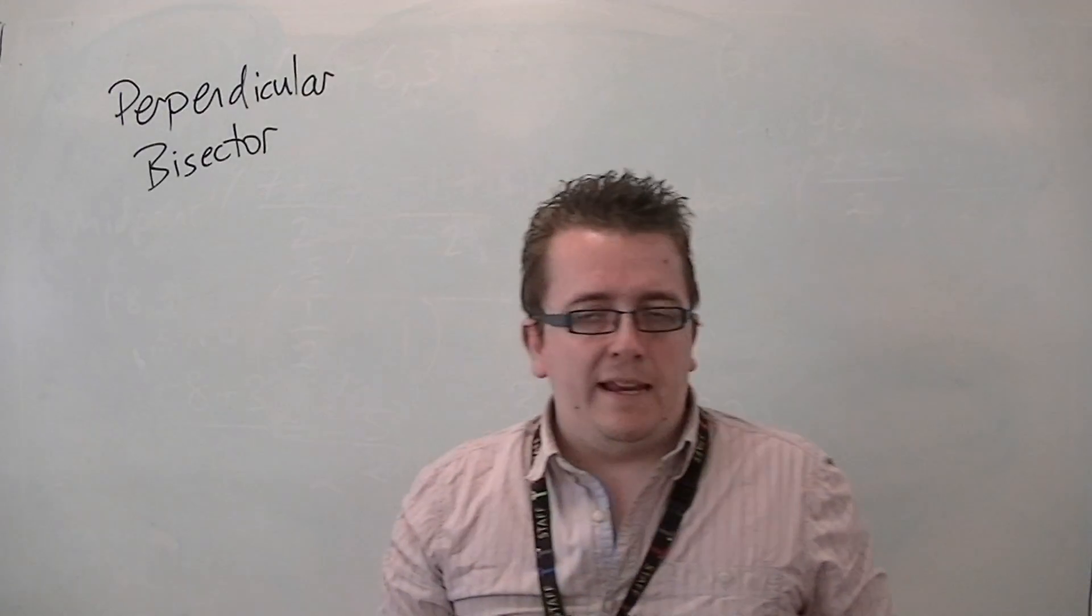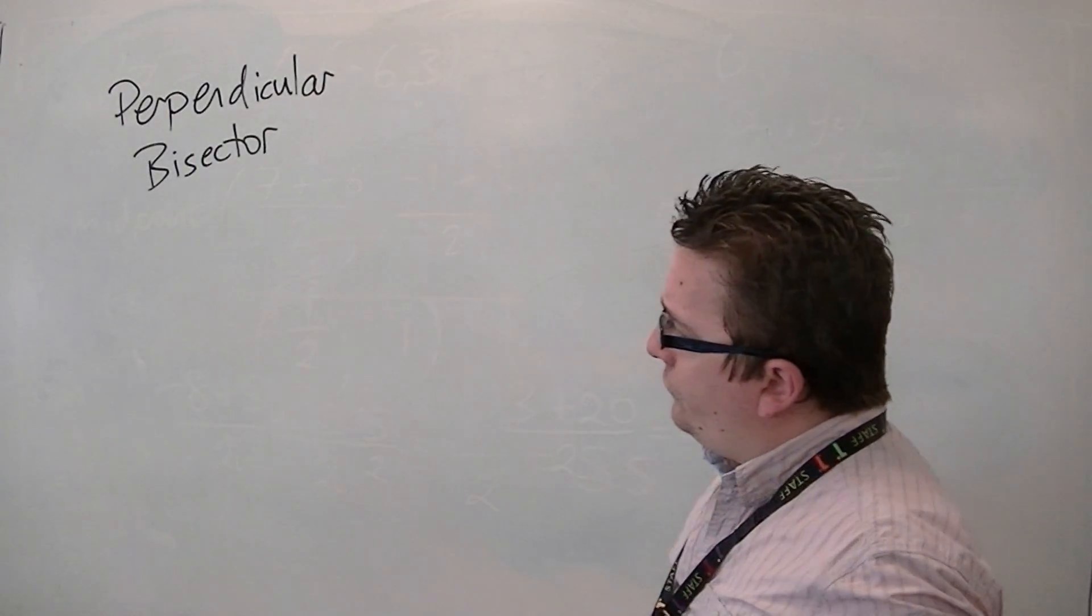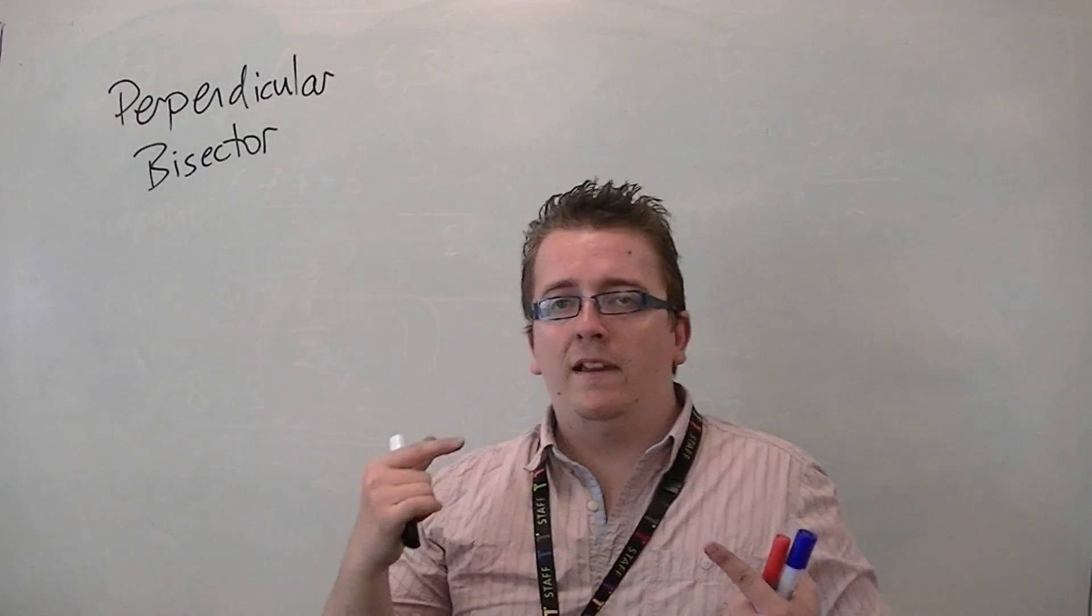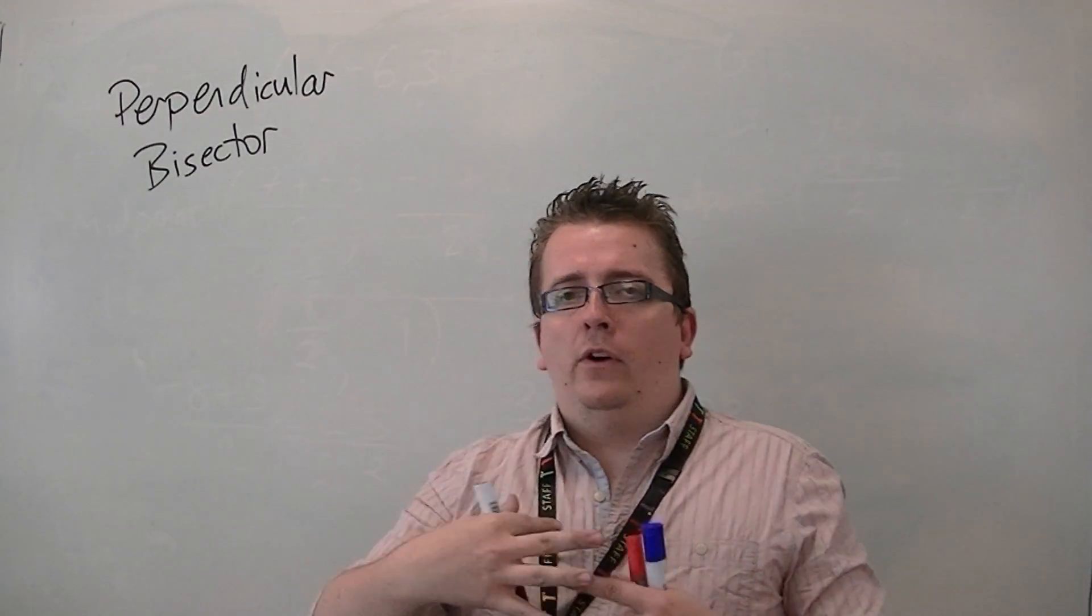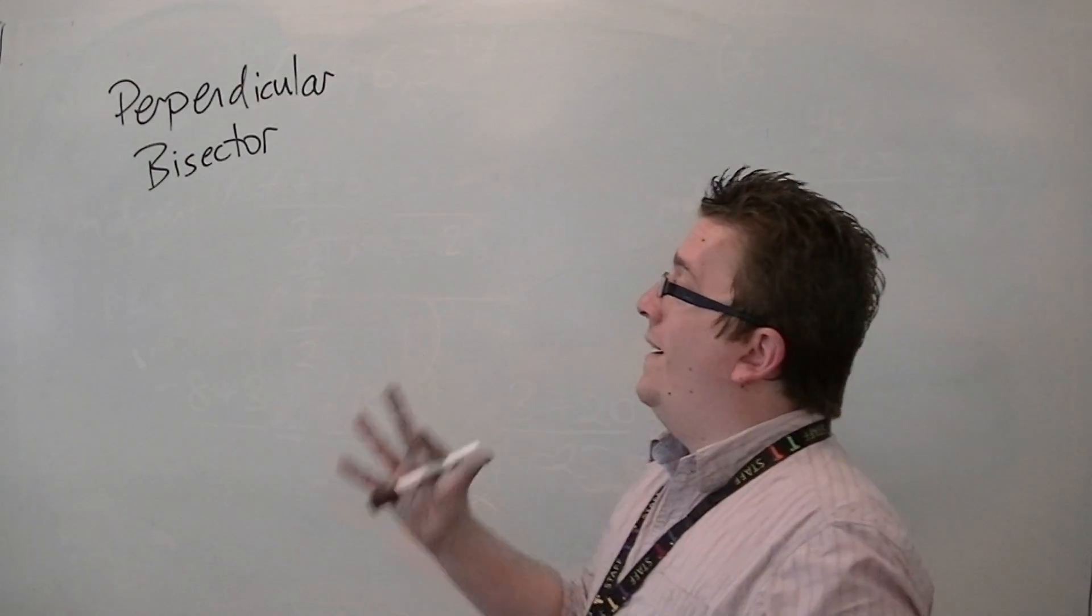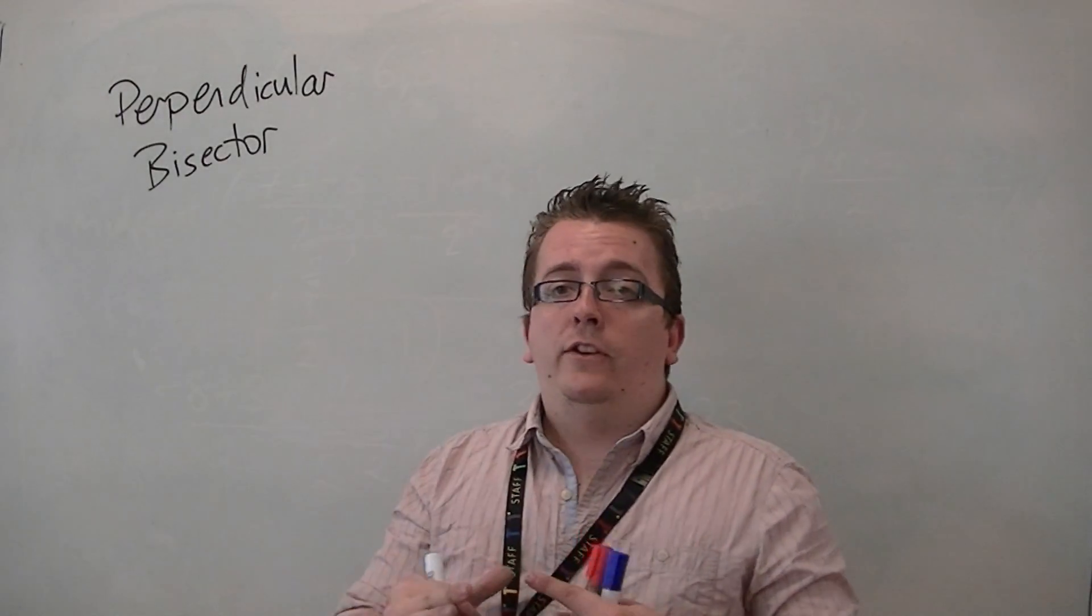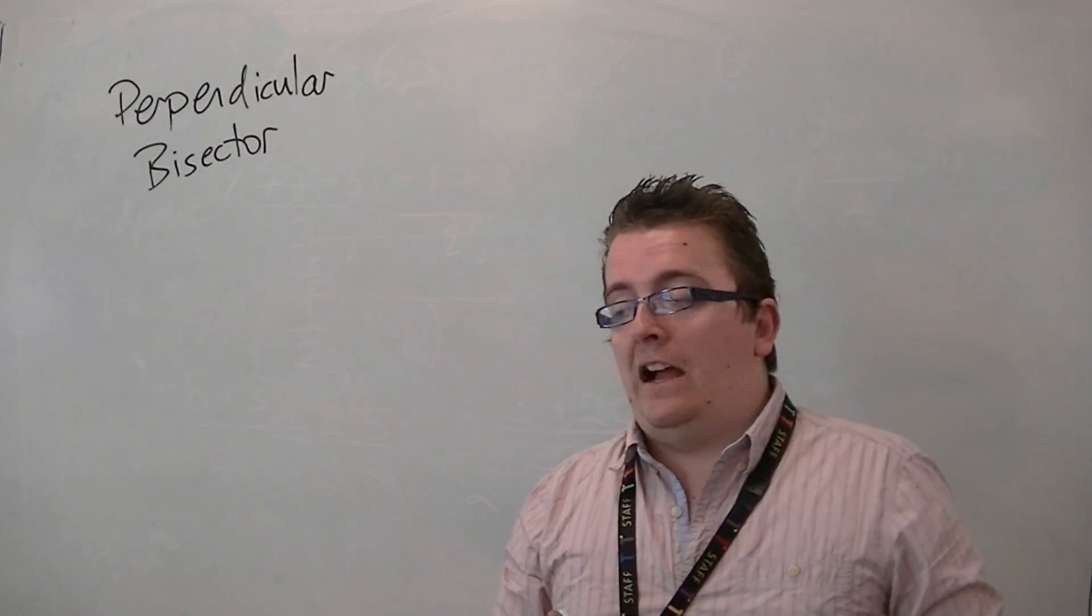So what this means is that we are looking for a line that cuts another line in half, it bisects it and meets that line at right angles.